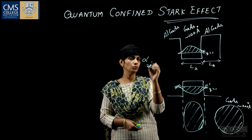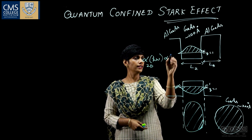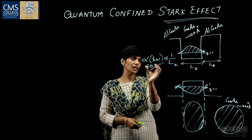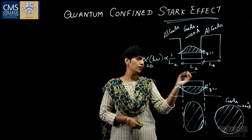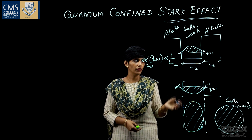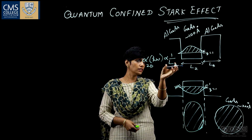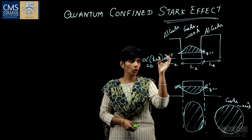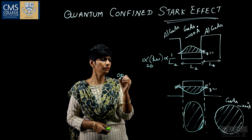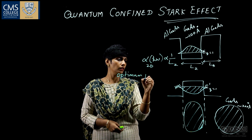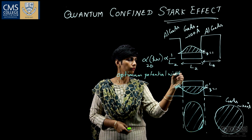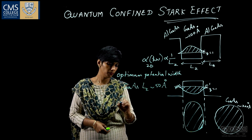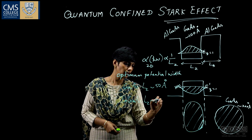There is a slight penetration of the wave function into the barrier material. The absorption coefficient for 2D is inversely related to the well thickness, so as we reduce the thickness of the potential well, absorption increases. However, we cannot reduce it as we wish — there is an optimum well width, because as we decrease the thickness, the wave function starts penetrating more into the barrier material. For gallium arsenide, the optimum potential width is approximately 50 Å, and for indium gallium arsenide it is approximately 80 Å.